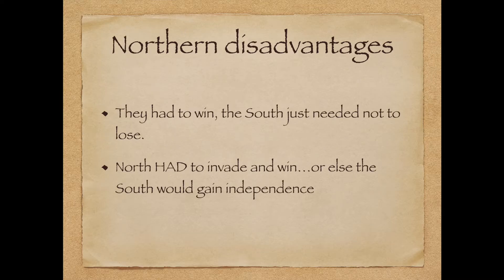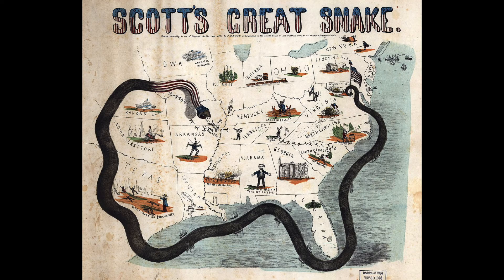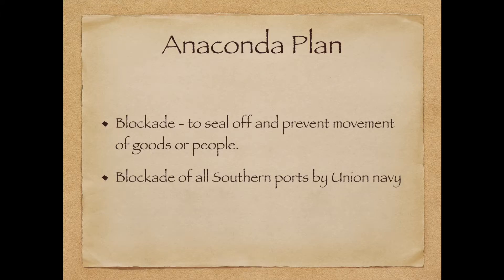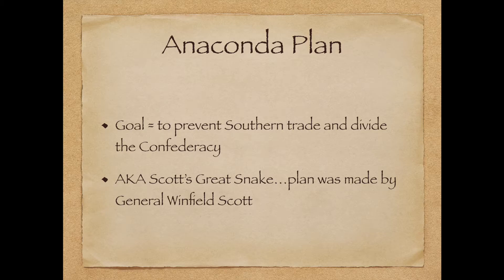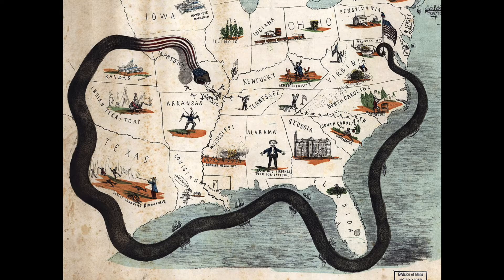Perhaps the North's biggest disadvantage was that they actually had to win the war by conquering the South. So came the North's main strategy, the Anaconda Plan, also known as Scott's Great Snake. The Anaconda Plan was a blockade of Southern ports — if the South could not export their cotton, they couldn't make much money. Additionally, they relied on imports for weapons, food, and other supplies. Part of this plan included taking over the Mississippi River and effectively cutting the Confederacy in half. Then, like an Anaconda, the Union would be able to squeeze the Confederacy into submission.